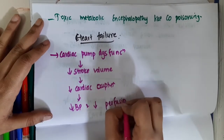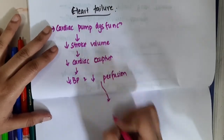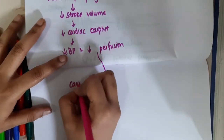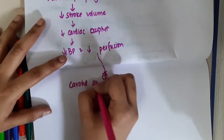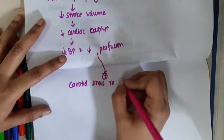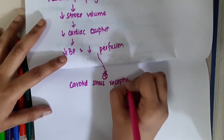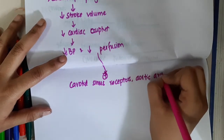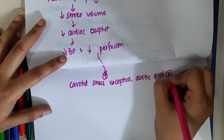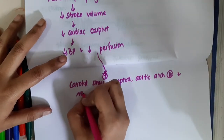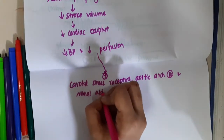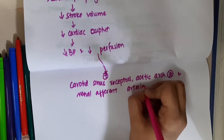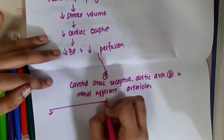This decrease in cardiac output, blood pressure and decreased perfusion is sensed by carotid sinus receptors, aortic arch receptors and renal afferent arterioles. Because of all these, this will result in three processes.